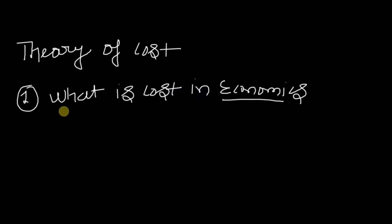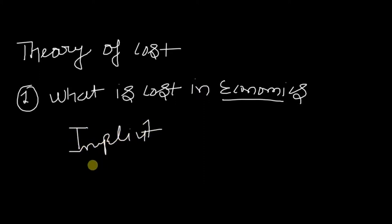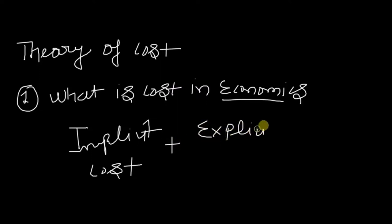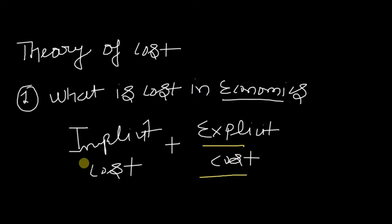When it comes to cost in economics, it is not just about what you end up spending. It also includes three important things in complete prospect. Number one is implicit cost — the cost for which you do not make a payment outside. Then comes explicit cost, which means the cost you are required to pay, resulting in an outflow of cash.